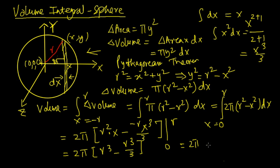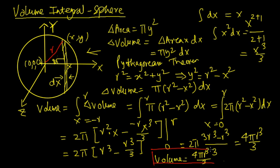volume becomes 2 pi times (r cubed minus r cubed by 3). That's 2 pi times (3 r cubed by 3 minus r cubed by 3), which becomes 2 pi times 2 r cubed by 3, so 4 pi r cubed by 3. So the volume equals 4 pi r cubed by 3.